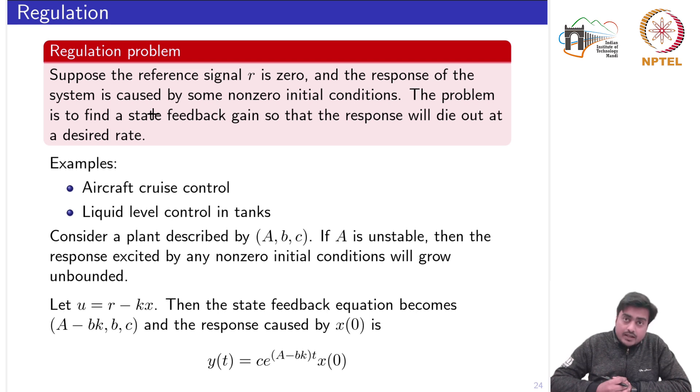If the system A is already stable then it is clear that for the zero reference signal and for non-zero initial conditions the response of the plant would be stable and tend towards zero. But in that case you won't be able to achieve certain desired rate.